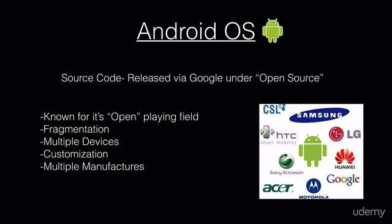Android OS is also known for its fragmentation — meaning that while it's the most popular OS, it's popular because it's on multiple devices with multiple versions. No one Android device is the same. Unlike iOS, which typically releases just two devices at a time, Android has many different manufacturers: Samsung, HTC, Motorola, LG. There's no one specific Android phone — there are multiple at a time, and not all are always running the same version.